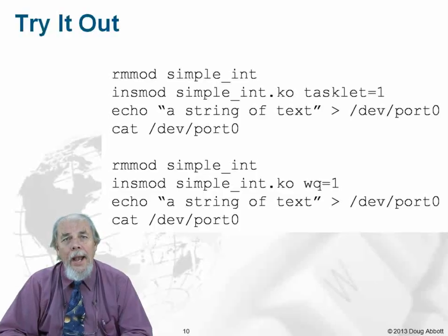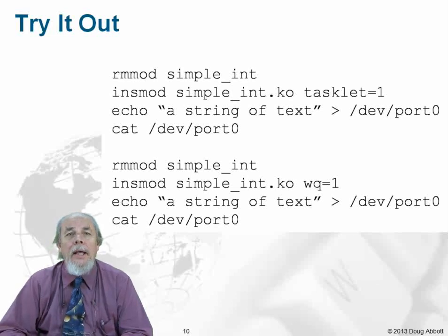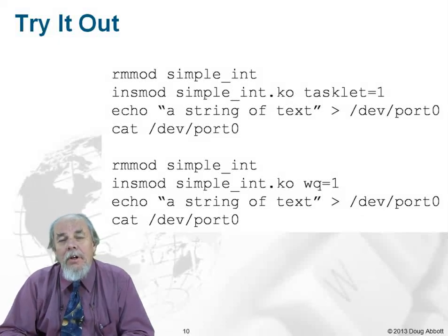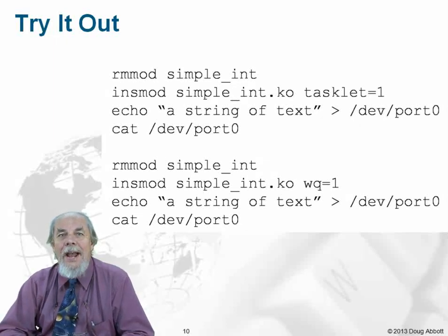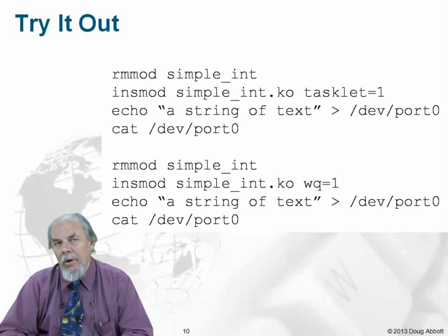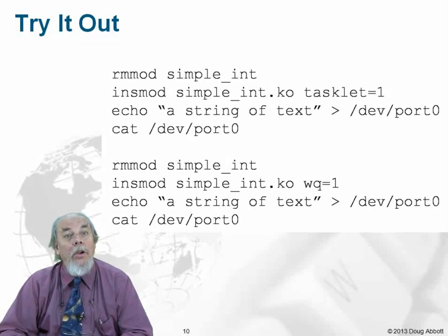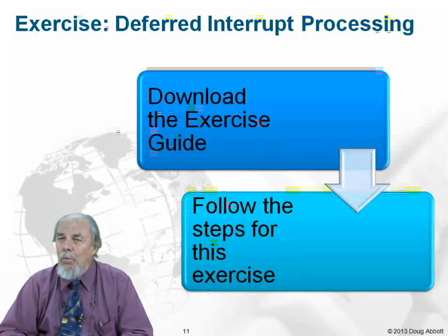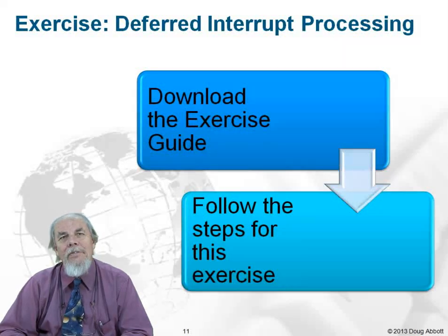Give it a try. All you have to do is remove simple_int and insmod it, this time with the parameter tasklet equals one. Echo text to /dev/port0 and cat port0. Do the same thing with the work queue and see if you notice any difference. Once again it's your turn — give it a try.